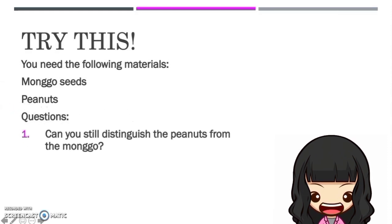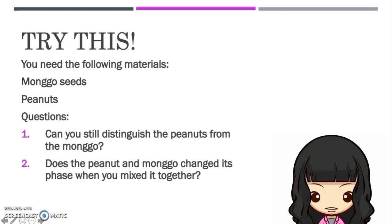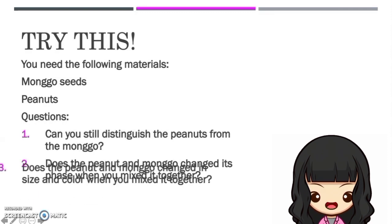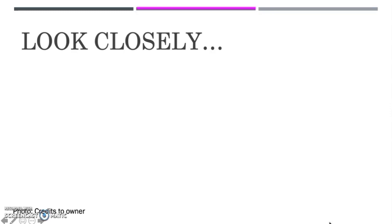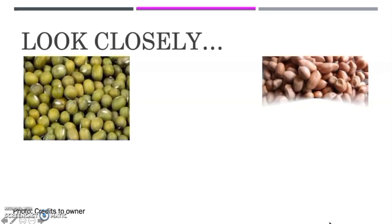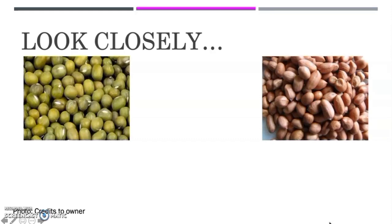First question: Can you still distinguish the peanuts from the mongo? Second question: Does the peanut and the mongo change its phase when you mixed them together? And the third question: Does the peanut and mongo change in size and color when you mixed them together? Let's find out and try this activity. Let's look closely and mix the mongo seeds with the peanuts. After mixing them together, we have this mixture.